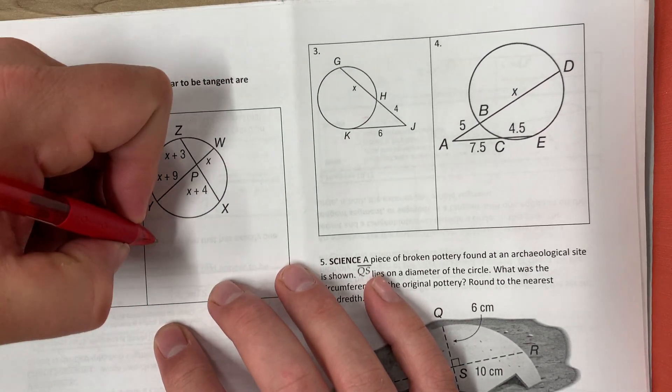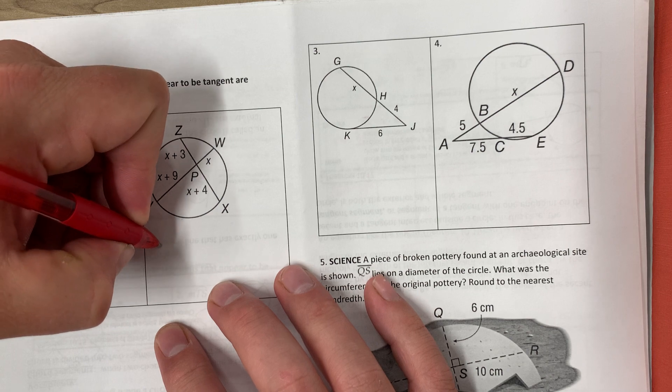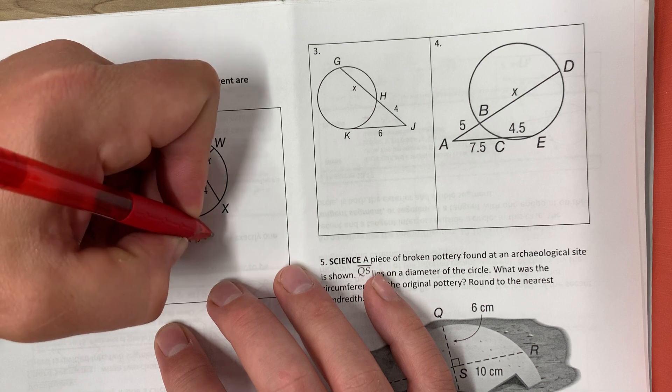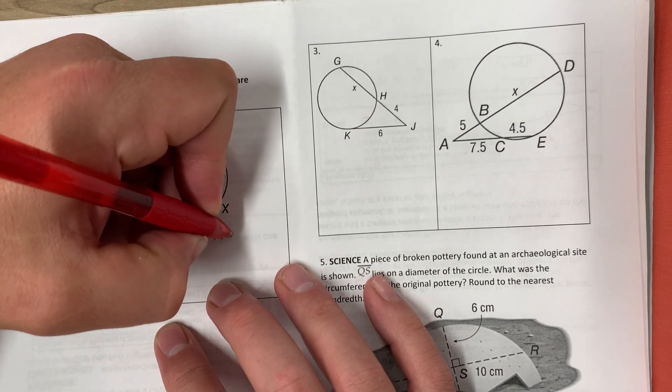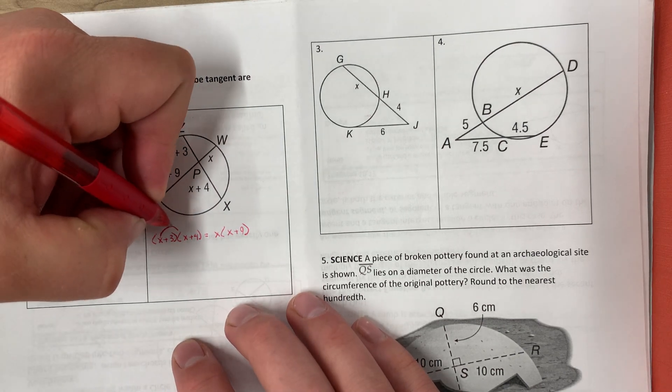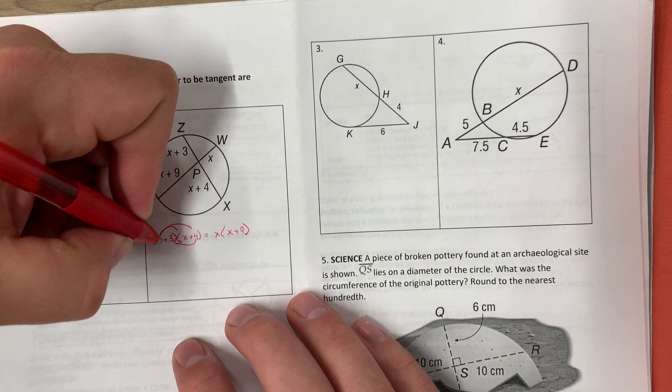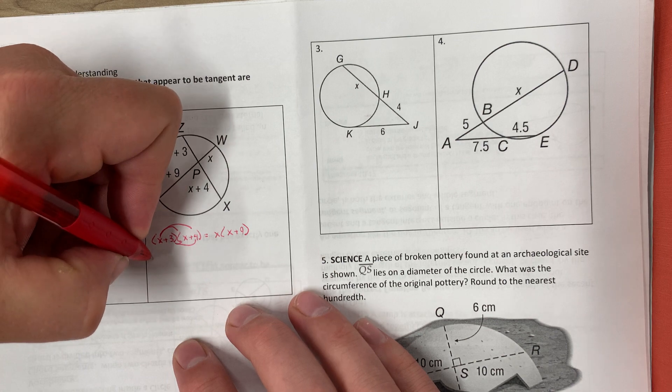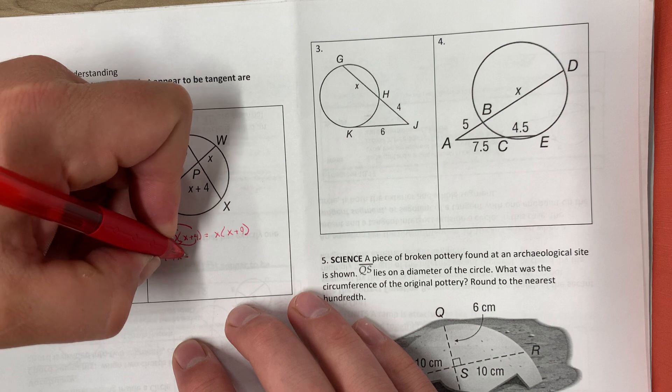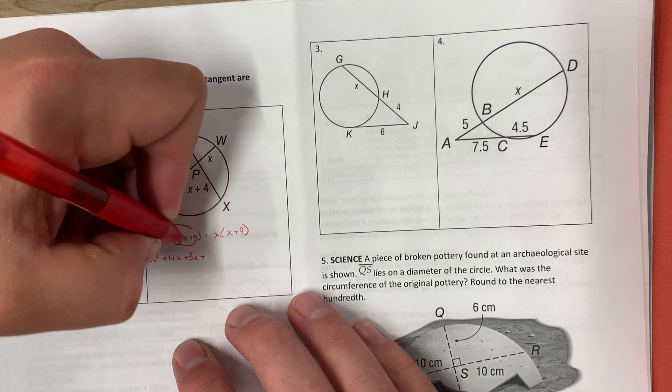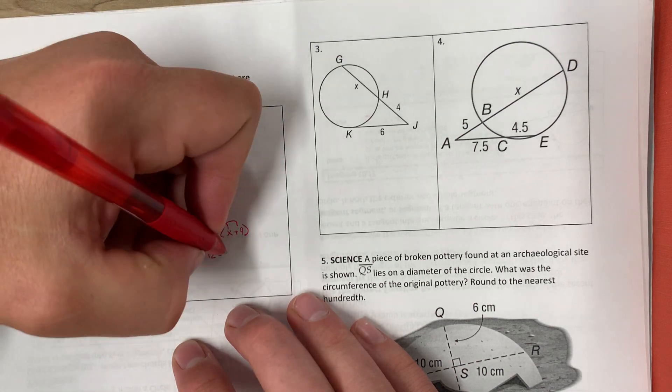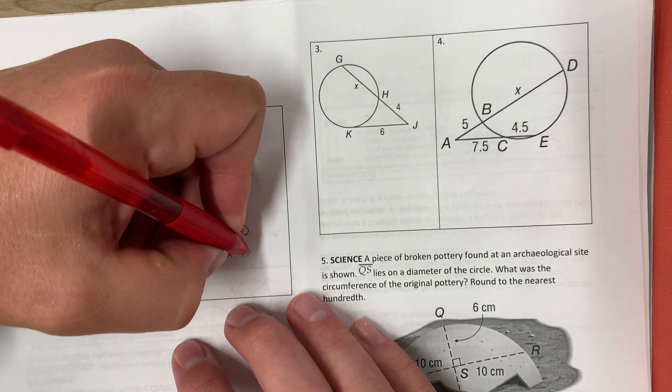So this one, doing the same thing, we'll have X plus 3 times X plus 4 equals X times X plus 9. And so we're going to have to FOIL. So we'll have X times X which is X squared, X times 4 which is 4X, 3 times X is 3X, and 3 times 4 is 12. Same thing on this side, we've got to distribute that X. So we'll have X squared plus 9X.